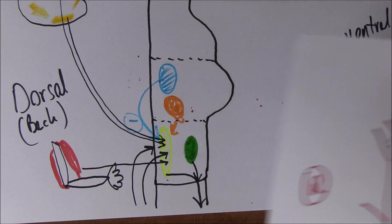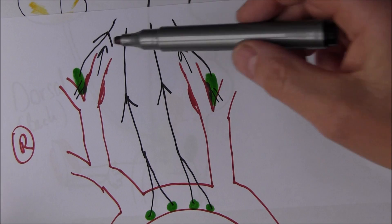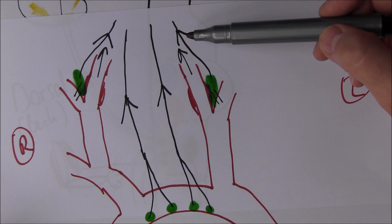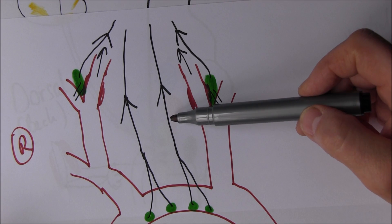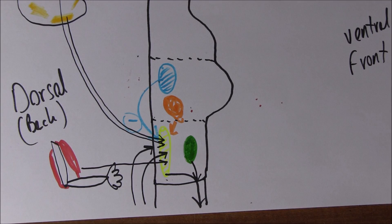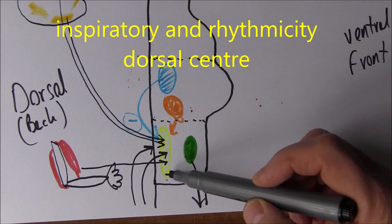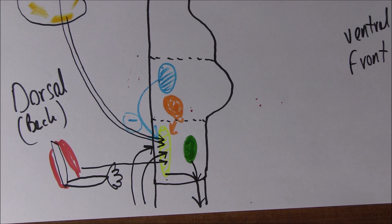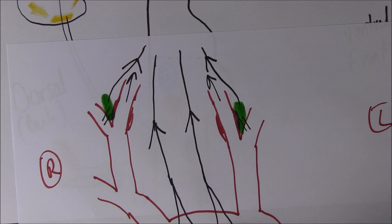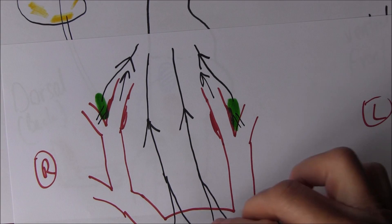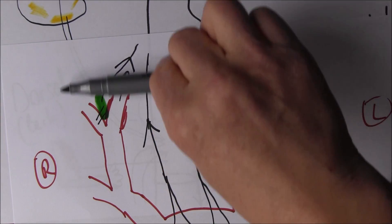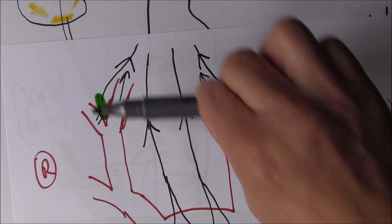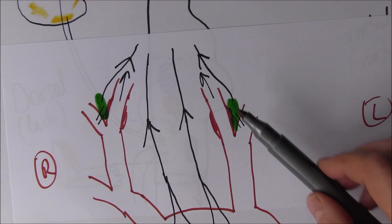This is bilateral - there are glossopharyngeal nerves on the right and left side, and vagus nerves on both sides, all taking impulses up to the brain and feeding into the rhythmicity centre. The lower the oxygen level detected by the aortic and carotid bodies, the more nerve impulses they generate. Eventually they are essentially screaming at the brain saying 'we're hypoxemic.'